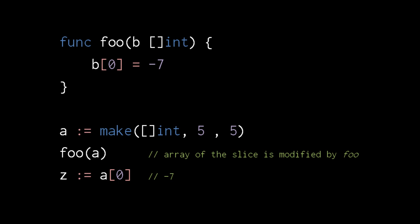When a function takes a slice parameter, what the parameter receives is a copy of the slice value, not the underlying array. So here when we pass the slice to function foo, the parameter b points to the same underlying array as a, and so this assignment to the slice in foo affects a. The first index of a now has the value negative 7.